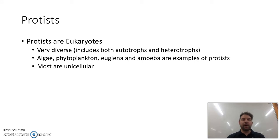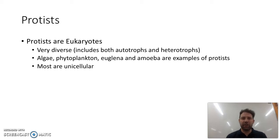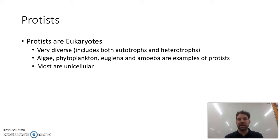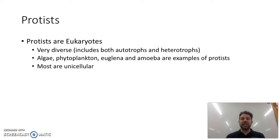Next are protists. Protists are eukaryotes with a really diverse range. They can be autotrophs or heterotrophs. They include algae, phytoplankton, euglena, and amoeba. Lots of examples of protists, and most are unicellular.